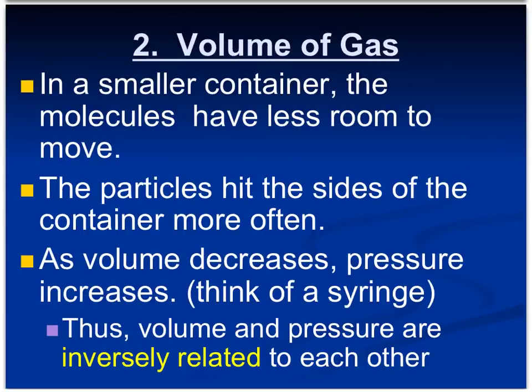The second factor that affects gas pressure is the volume of a gas. In a small container, the molecules have less room to move and hit the sides more often. As volume decreases, pressure increases — meaning volume and pressure are inversely related. Imagine putting 50 students in a gym: there's lots of room and few collisions. But if you put those same 50 students in a classroom, there will be more collisions because there's less space to move around. As volume decreases, pressure increases — that's what we mean by an inverse relationship.